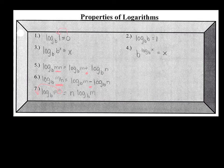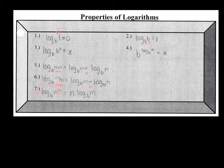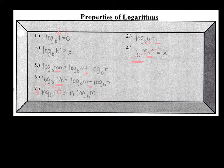Just like the first rule — anything to the zero power is always one — if the same base of your log equals your argument, say you had log base six of six: six to what power gives you six? One. So if your argument and the base of your log are the same, it has to be to the first power. And for property four: if the base of an exponent and the base of your log are the same, they cancel each other out and you're left with just that exponent.